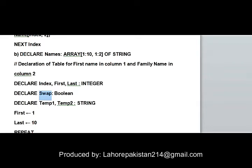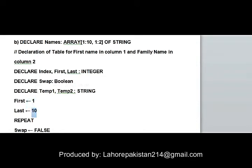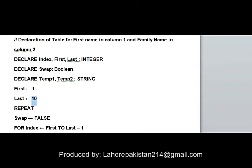We also declare two variables, temp1 and temp2. If any names need to be reordered, they will temporarily be saved in these two variables — the first name saved in temp1, the second in temp2. Then we set 'first' as a constant with a starting value of 1, and 'last' with a starting value of 10. We then start a loop — a series of repetitions.